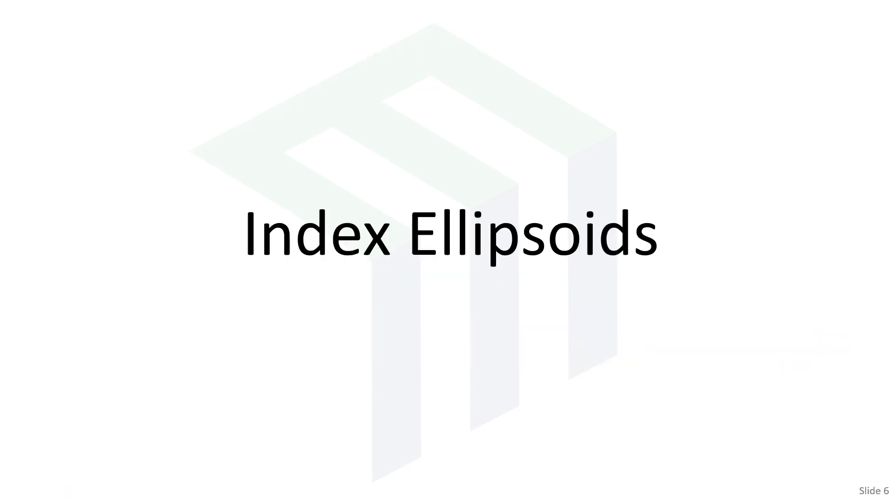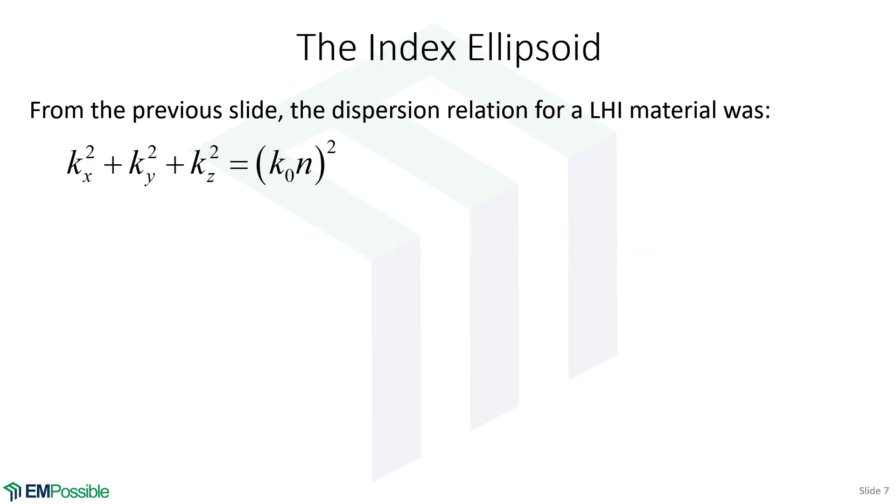This brings us into the topic of index ellipsoids. So there's our dispersion relation that we derive for linear homogeneous isotropic materials. Now let's stare at this for a bit. Does that seem familiar at all? Well, if we stare at it long enough, what we might realize, that is actually the equation for a sphere.